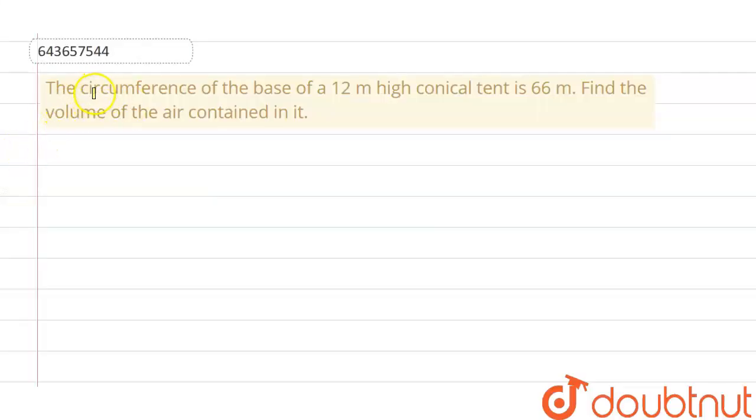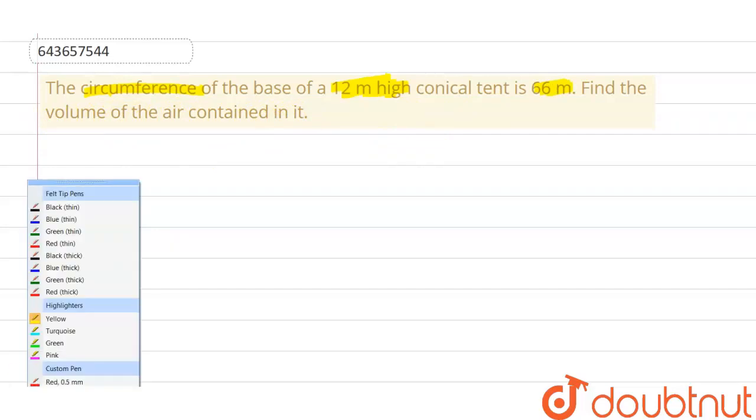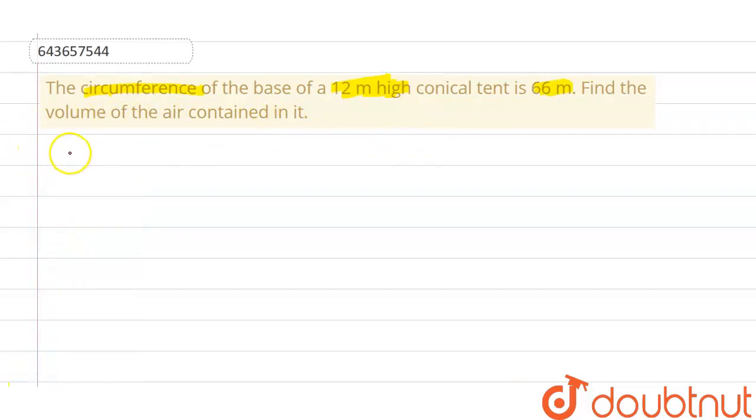The question says the circumference of the base of a 12 meter high conical tent is 66 meter. Find the volume of the air contained in it. So, circumference formula for circumference is 2πr.